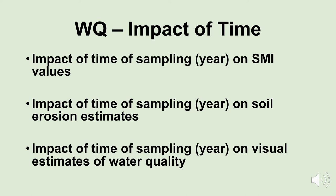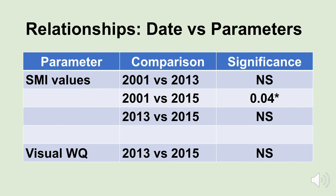We also have to consider the impact of time of sampling on SMI values, on soil erosion estimates, and on visual estimates of water quality. Looking at benthic macroinvertebrate values, we didn't see any difference when we compared samples taken in 2001 versus 2017, or in 2013 versus 2015. But there was a difference when we compared the samples taken in 2001 to those from 2015 — that's a 14-year period — so we did see change over a 14-year timeframe.